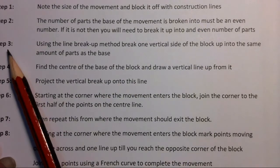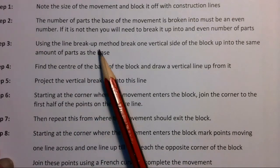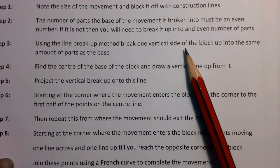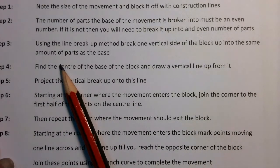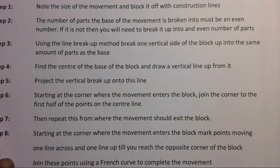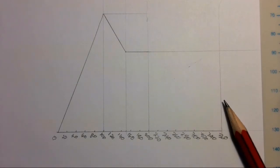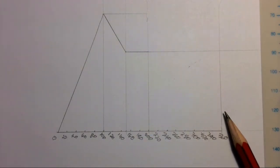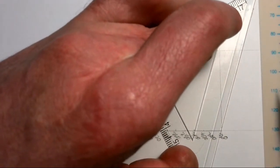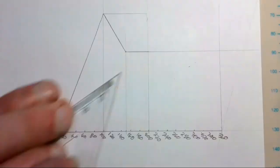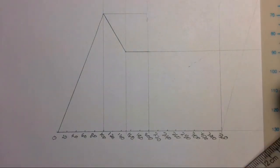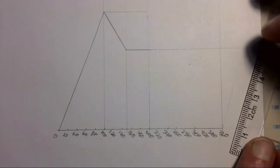For step three, using the line break method, we break one vertical side of the block into the same number of parts as the base — eight. We take either vertical side of our block and break it into eight parts. The line break method means drawing a line out at any angle and breaking it into an equal number of parts.